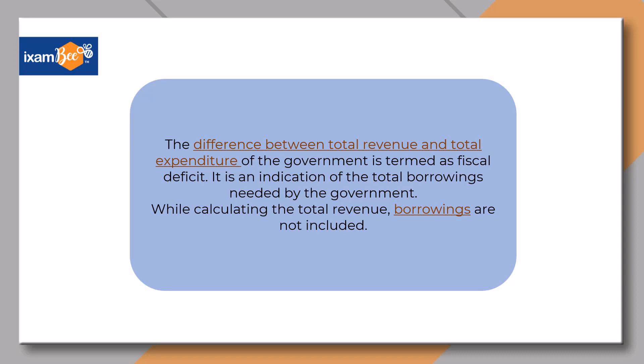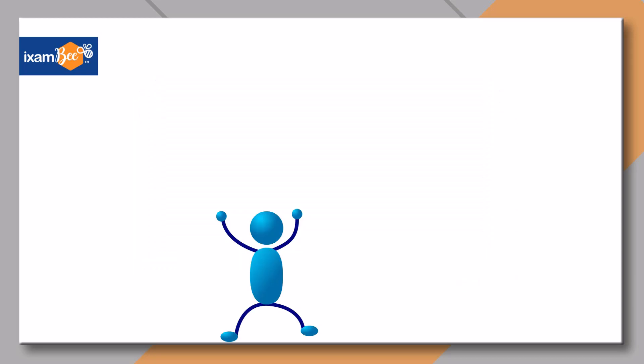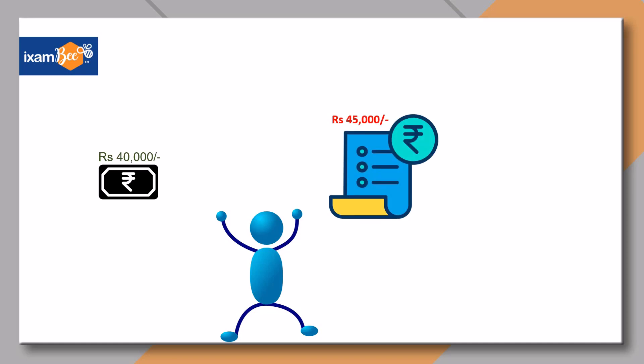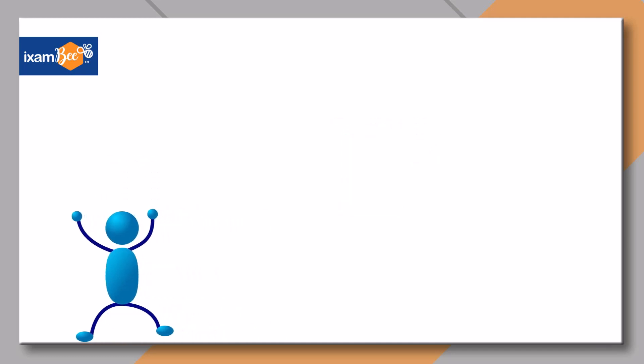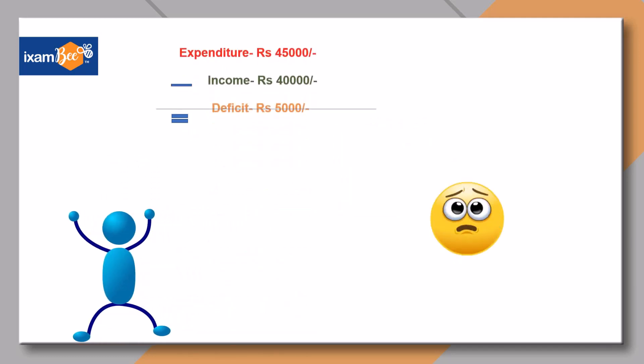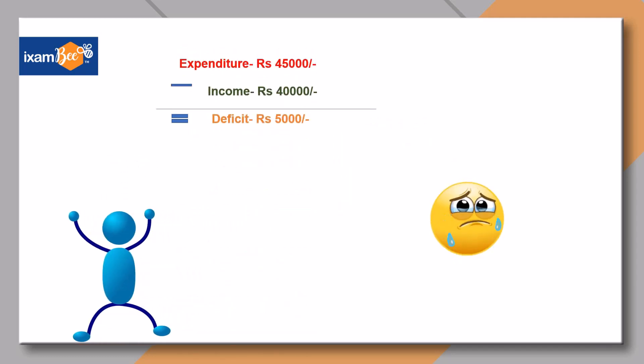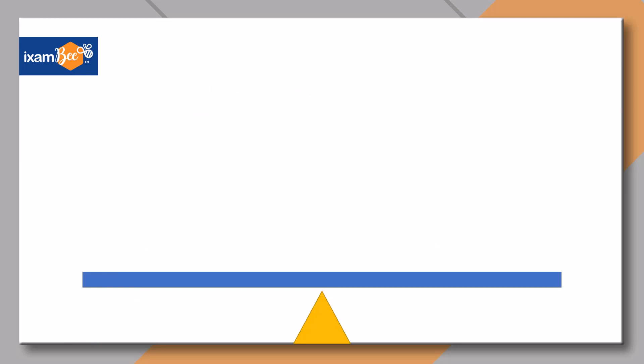Let us understand this through an example. A person earns rupees 40,000 in a month, however he spends rupees 45,000 every month on rent, food, travel, etc. When we subtract the person's income from its expenditure, what we get is deficit. In this case, the deficit is rupees 5,000.